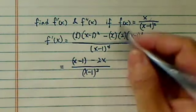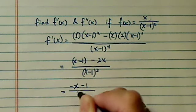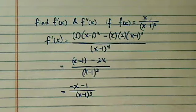So basically, top and bottom, I simplified. Now this one, I have minus x minus 1, x minus 1 to the 3rd. That's my first derivative.